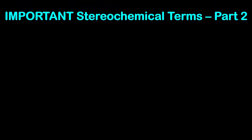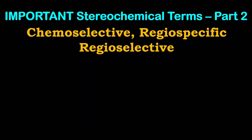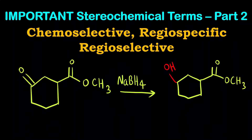Hello everyone. Welcome to Chemazon Complete Chemistry. In today's video we are going to see some more important stereochemical terms. This is part two of the same topic. We had already seen some important terms like stereospecificity, stereoselectivity, enantioselectivity, enantiospecificity, diastereoselectivity, and diastereospecificity. In this video we are going to see what is chemoselective, what is the meaning of regiospecific and what is regioselective.